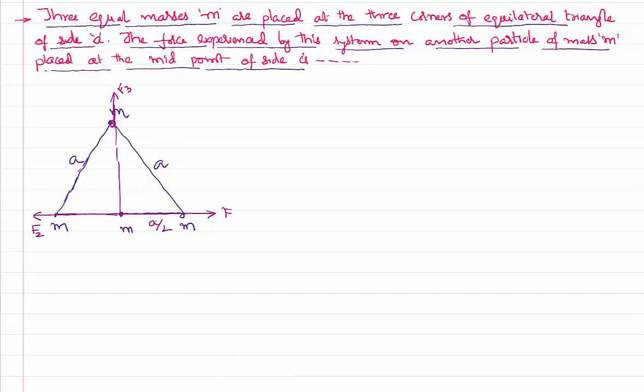This being a midpoint becomes a by 2. This becomes a by 2. So I would like to say F1 is equal to F2. Why are they equal? Because the masses are equal, the separation is equal. How much is that? G m1 m2 by (a by 2) whole square. And F1 is opposite to F2. They are equal in magnitude, opposite direction, and hence F1 cancels F2.